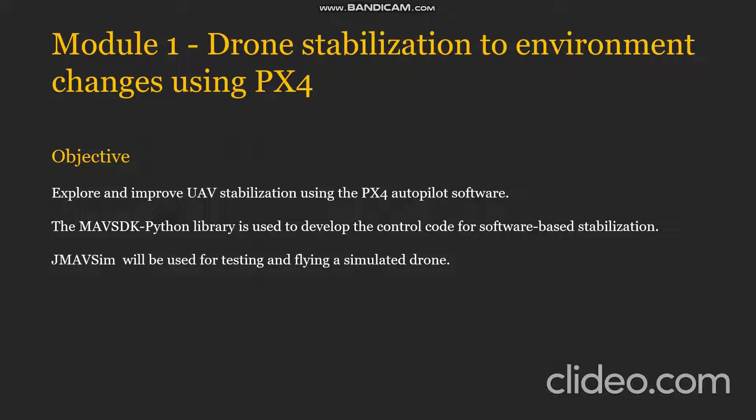Module 1: Drone Stabilization to Environmental Changes using PX4. In this module, our main objective is to explore and improve UAV stabilization algorithms, focusing on improvement using the PX4 Autopilot software. We also make use of the MavSDK Python library to write Python code that can connect with the PX4 back-end software and develop the control code for software-based stabilization. The JMAF simulator will be used for testing and flying a simulated drone, providing a safe environment for testing dangerous and experimental code. Now, we will look at the demo for this module.